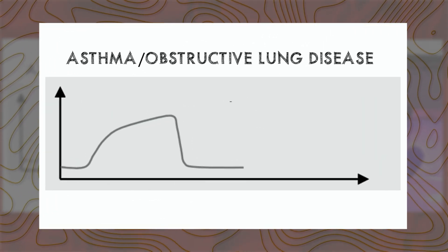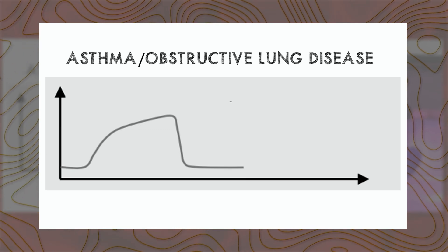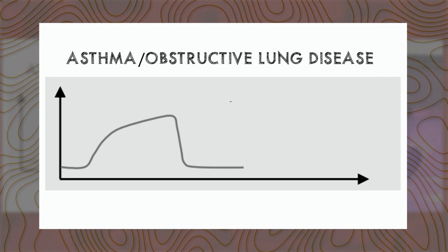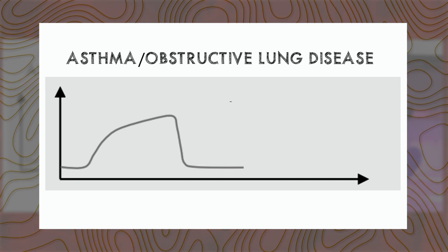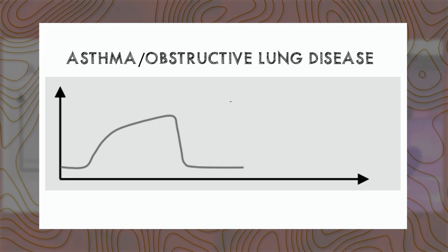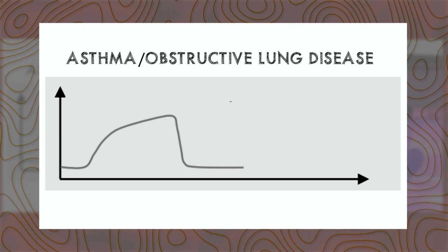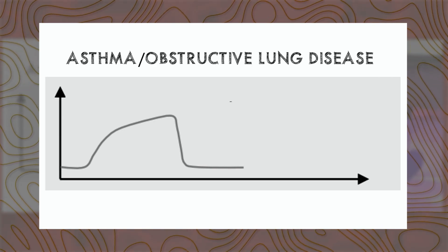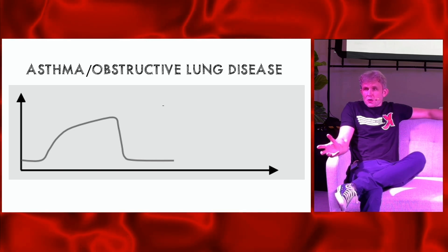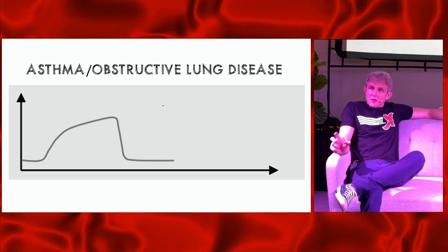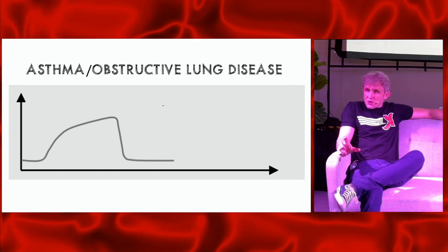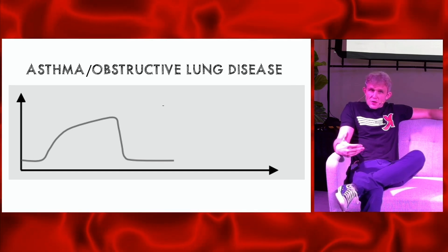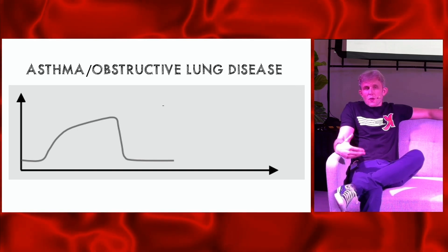The most classic waveform change is the shark fin, seen in asthma or obstructive lung disease. There's prolonged exhalation — instead of a rapid alpha angle and flat plateau, you get a slow slope as anatomic dead space washes out slowly and eventually equalizes at the top. This is indicative of obstructive lung disease. It doesn't necessarily mean breath-stacking or that you must change settings, but it should make you assess the patient, and you can actually watch it improve with treatment.